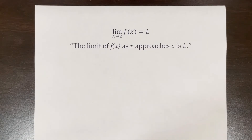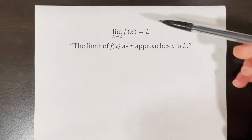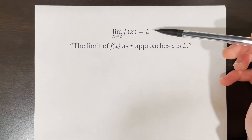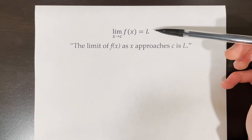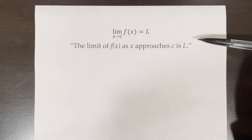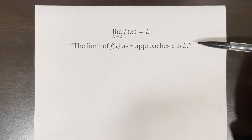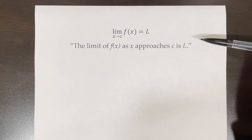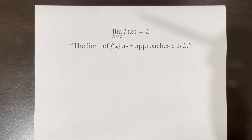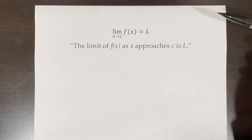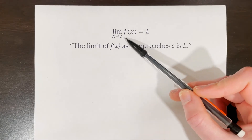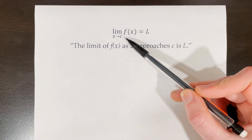This is limit notation. The way that this type of limit notation is pronounced is: the limit of f of x as x approaches c is L. In simple terms, a limit is the value that the y-coordinate of a function approaches as the x-coordinate approaches the value of c.